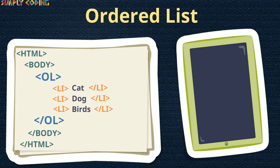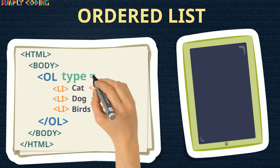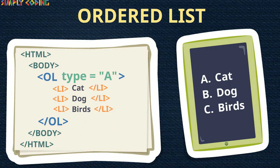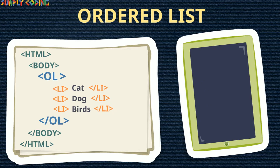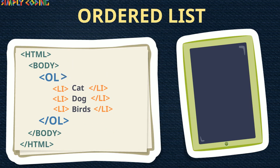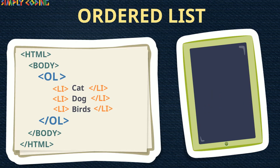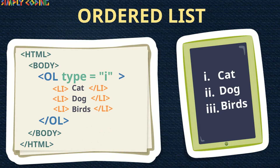Let's use this in an example. In the first example, we have not specified any attribute, so by default it has taken Arabic numerals. Next, let's use capital A — this gives us an alphabetical list. We can use small a if we want the list in lowercase letters. Similarly, if we use capital I, it gives us a list using Roman numerals. We can use small i if we want the list in lowercase.